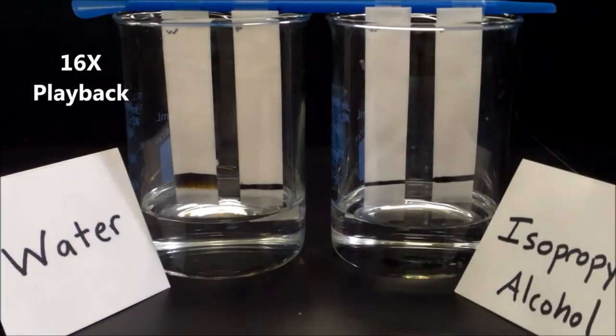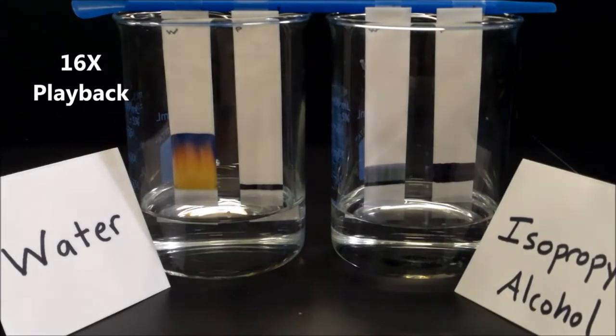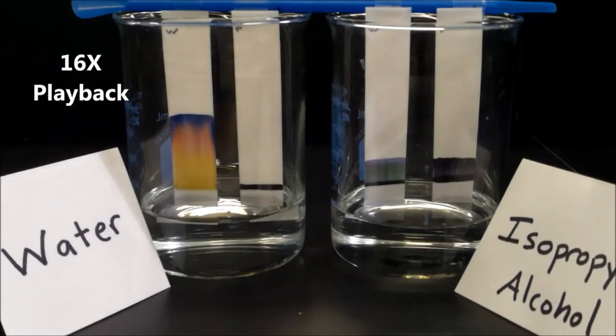When the samples are placed into the two different liquids, we see that the ink from the wet erase marker starts to move almost right away. The ink from the permanent marker is not moving at all in the water. Both inks are moving in the isopropyl alcohol. However, we see that they're not moving as much as the wet erase marker ink is moving when placed into the water.